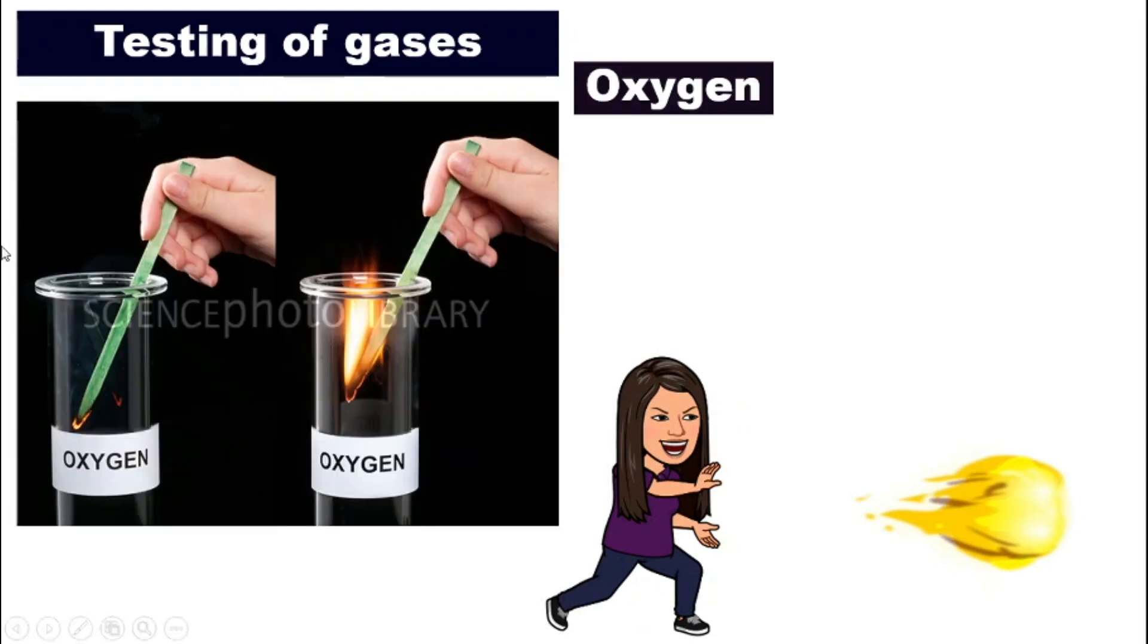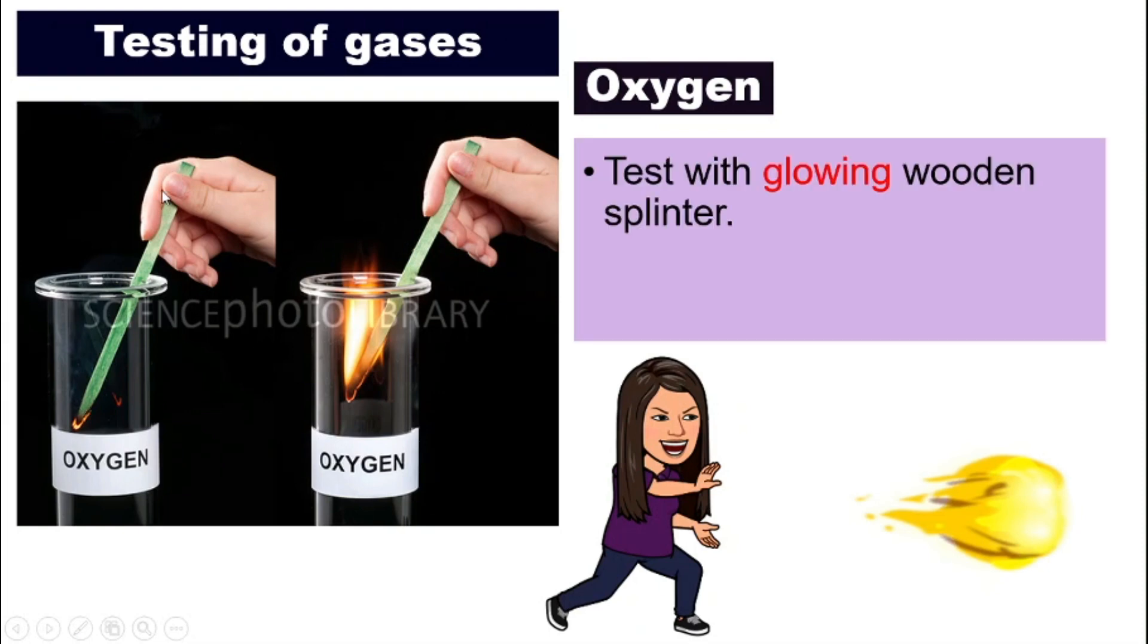We can test it by using a glowing wooden splinter. So the word glowing is very important. What does glowing mean? Look at the picture here. The wooden splinter has the glowing end. It does not have any fire. It does not light up. There's no flame. It's just a glowing wooden splinter. So for oxygen, we test it with glowing wooden splinter. Why? Because oxygen is a gas that helps in combustion. Or in another word, oxygen is needed to light up a fire. So if this test tube has oxygen in it, then the observation is the splinter will reignite. Meaning you will see it catch on fire again. There is a fire or there's a flame again on that wooden splinter. So this is very important. You need to remember.